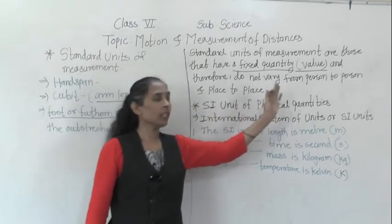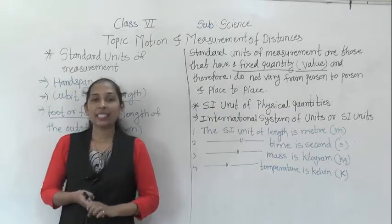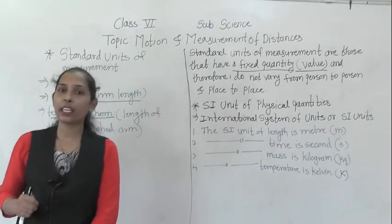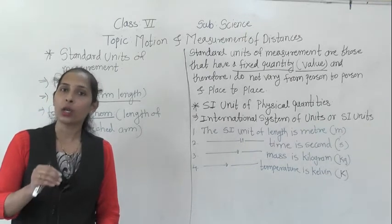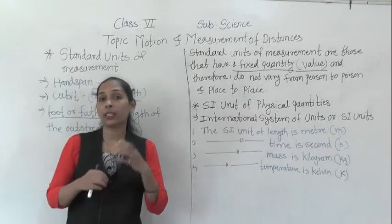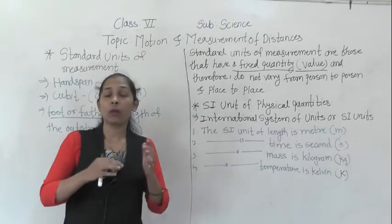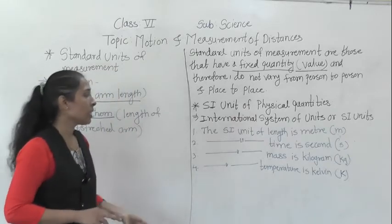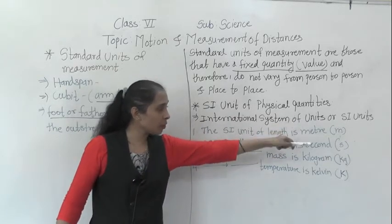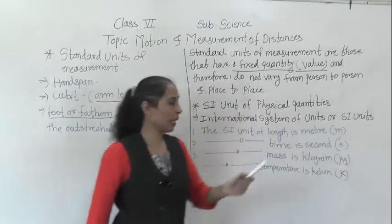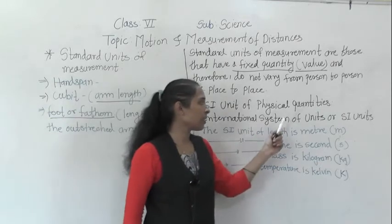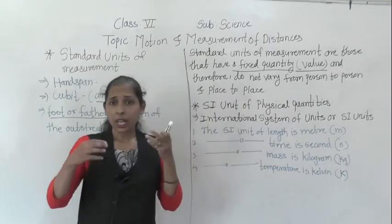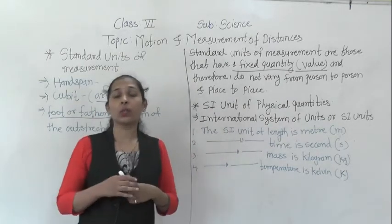Now let's discuss the SI units of physical quantities. In 1960, scientists adopted a common set of standard units for the measurement of different physical quantities. That system is called the International System of Units, or SI units. SI units are used in different countries — they are used worldwide.